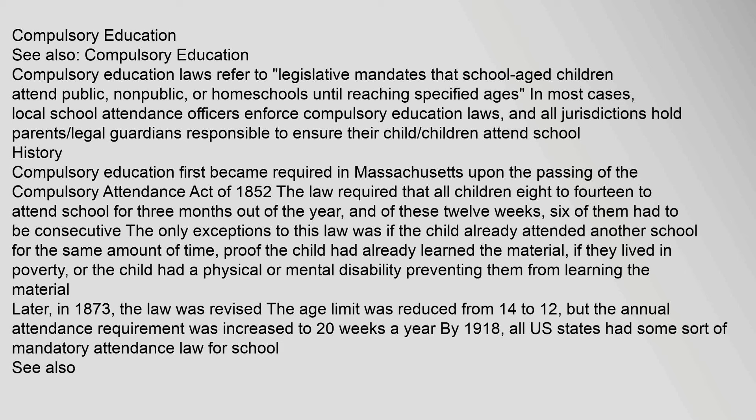Compulsory education laws refer to legislative mandates that school-aged children attend public, non-public, or home schools until reaching specified ages. In most cases, local school attendance officers enforce compulsory education laws, and all jurisdictions hold parents and legal guardians responsible to ensure their children attend school. Compulsory education first became required in Massachusetts upon the passing of the compulsory attendance act of 1852. The law required all children aged 8-14 to attend school for three months out of the year, of which six weeks had to be consecutive. The law was revised in 1873; the age limit was reduced from 14 to 12, but the annual attendance requirement was increased to 20 weeks a year. By 1918, all U.S. states had some sort of mandatory attendance law for school.